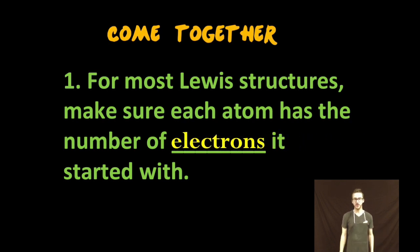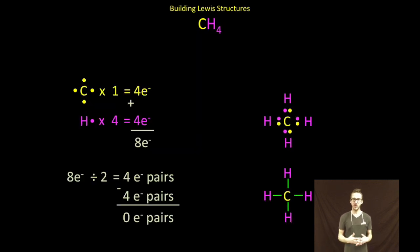Okay, and just some final notes for Lewis structures. For most Lewis structures, make sure that each atom has the number of electrons that it started with. So as I come back to this example, part of the reason why I like to color coat them is because it helps me remember which atoms they originally came from.